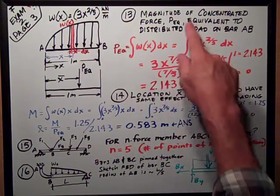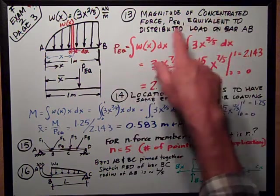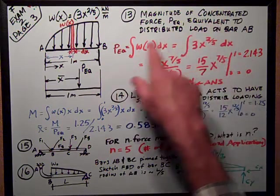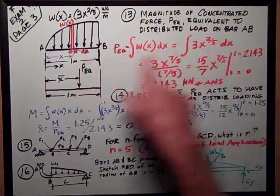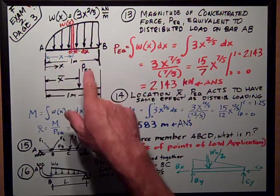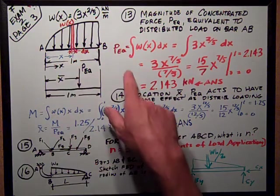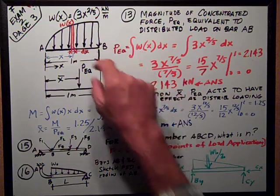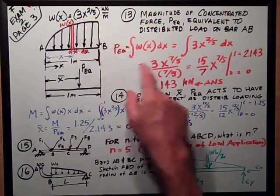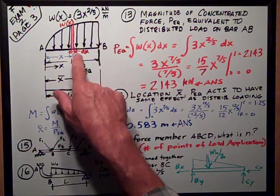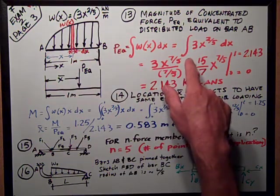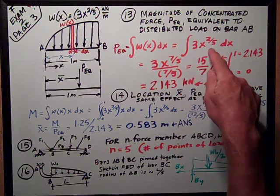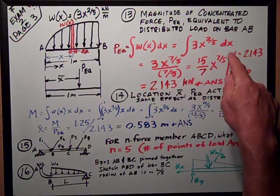To figure the magnitude of the concentrated force PEQ that's equivalent to the distributed load on the bar AB. It's one meter long. So PEQ is the integral of the function w(x), which is the value of the distributed load, times the width dx from one end to the other. So it's the integral of this function, 3x to the two-fifths power, dx.